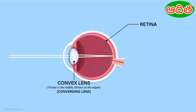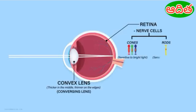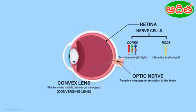The retina is at the back of the eye and marks the inner layer of the eyeball. It contains lots of nerve cells that sense the light. These nerve cells are of two kinds: cones, which are sensitive to bright light, and rods, which are sensitive to dim light. The message or sensation is then transferred to the brain along the optic nerve.